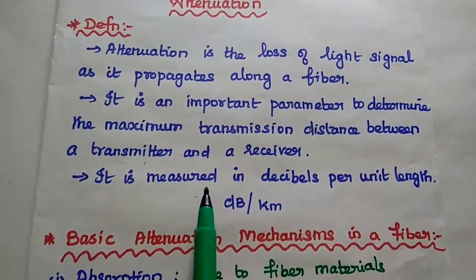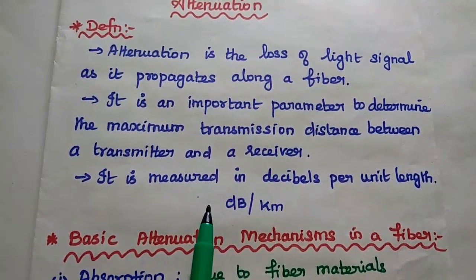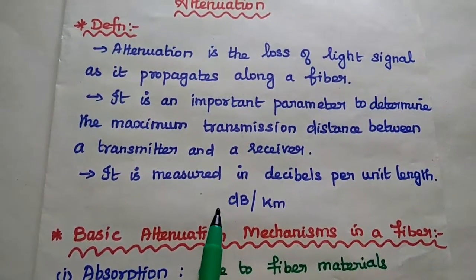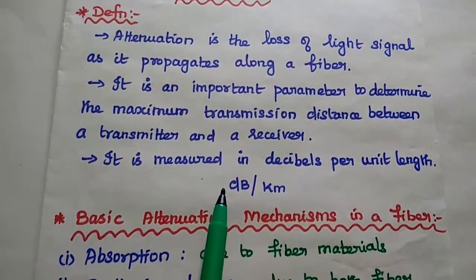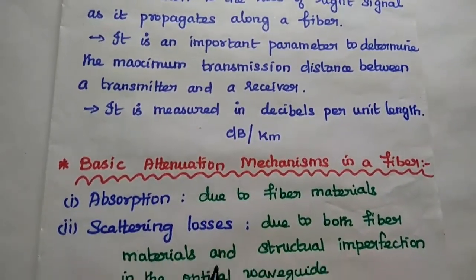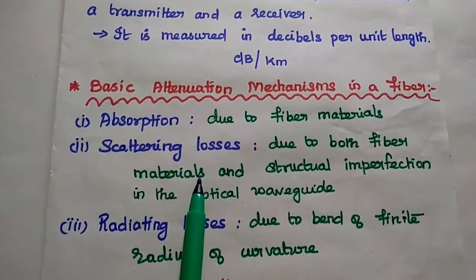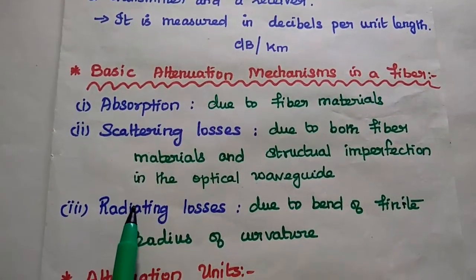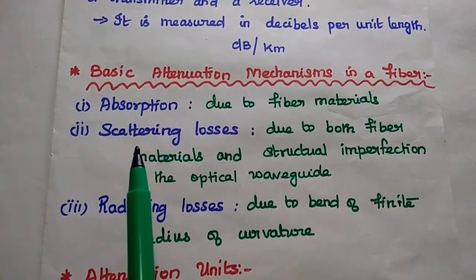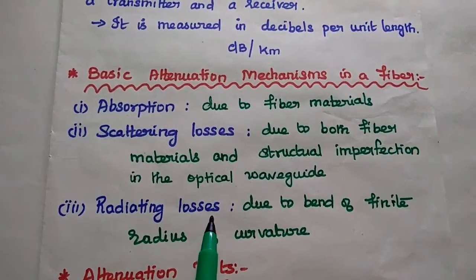Attenuation is measured in decibels per unit length. In optical communication, the unit length is kilometer, so it is generally measured in decibels per kilometer. There are three basic attenuation mechanisms in optical fiber: one is absorption, the next one is scattering losses, and the last one is radiating losses.